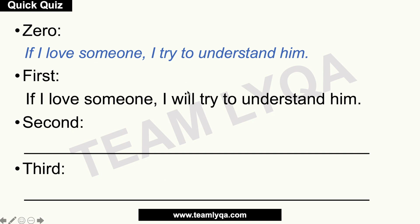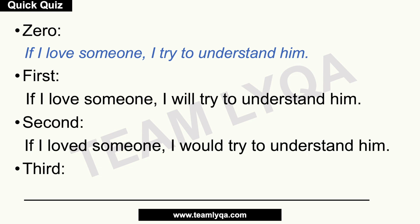For the second conditional: 'If I loved someone, I would try to understand him.' The first part changes to past simple — 'love' becomes 'loved' — and 'will' becomes 'would.' So the structure is: if plus past simple, comma, would, then the infinitive.